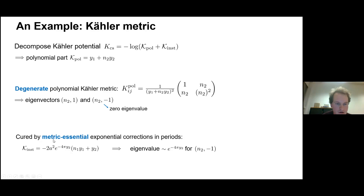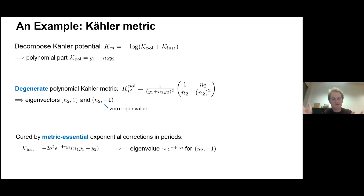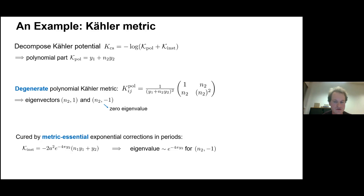Is this boundary at infinite distance? You can see that the vector n2, +1 points towards the singularity while n2, −1 points towards it in one direction and away in the other. The only way to approach the boundary is along the first eigendirection, making this a genuine infinite-distance divisor singularity provided n2 is non-zero, from whatever direction you approach. At first this was surprising: from the conifold you might expect exponential corrections to be important, but here we have an infinite-distance singularity where exponential corrections are essential.